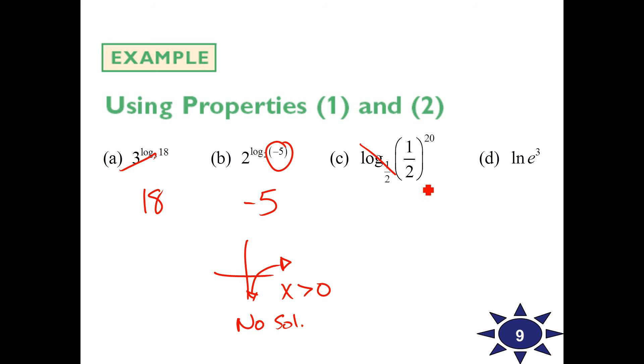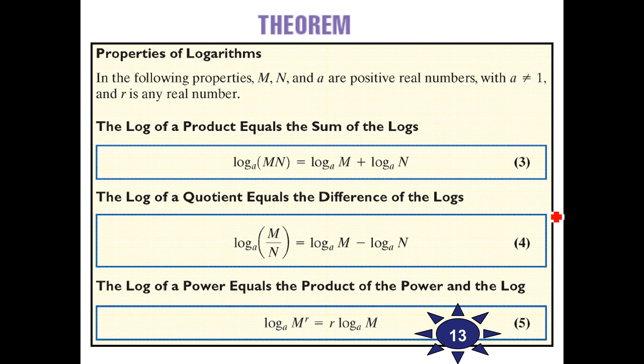How about this one? 1 half and 1 half are going to cancel out, and we're left with 20. And on this problem, they're going to actually cancel each other out because natural log is log base e of e cubed, and so we'll end up with 3. Take that information and see if you can do problem 9.